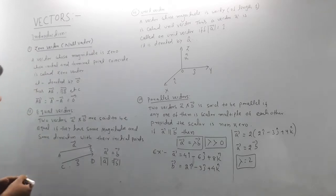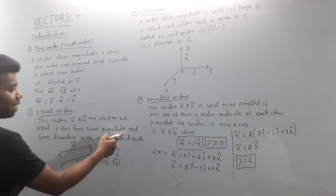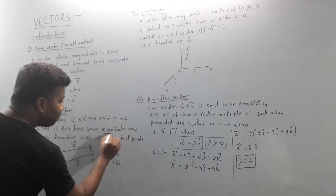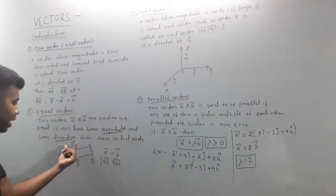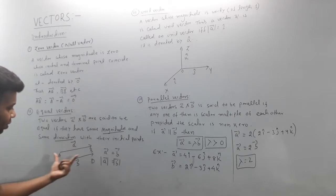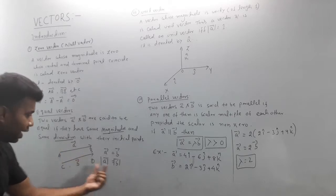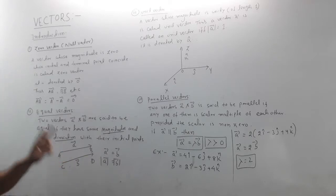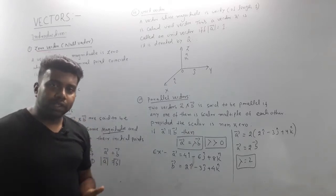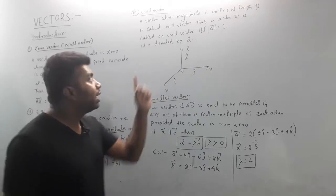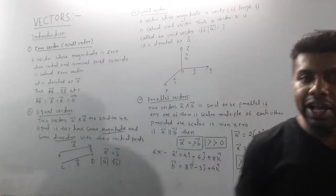Next is the equal vector. Two vectors A and B are said to be equal if they have the same magnitude and the same direction. The length of A is equal to the length of B, and the direction is the same.